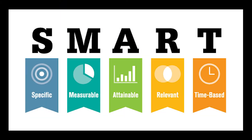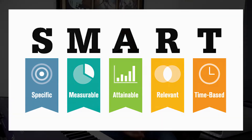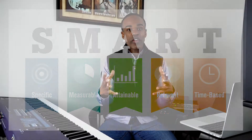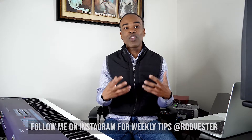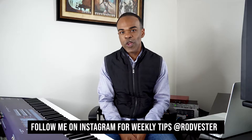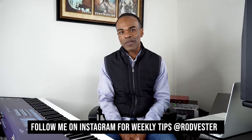So what does each letter stand for? S is Specific, M is Measurable, A is Attainable, R is Relevant, and T is Time-bound. Let's talk about SMART goals and, more specifically, how you can make your goals SMART in order to achieve your goals in the new year.